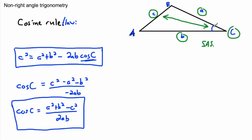So this version is used when you want to find an angle and you have all three sides. What if you're given all three sides and you want to know an angle? Then you can do it even if it's not right-angled. A lot of people think they can use Pythagoras, but Pythagoras theorem only works for right-angled triangles. This is for non-right angles, so it becomes a little more complicated.